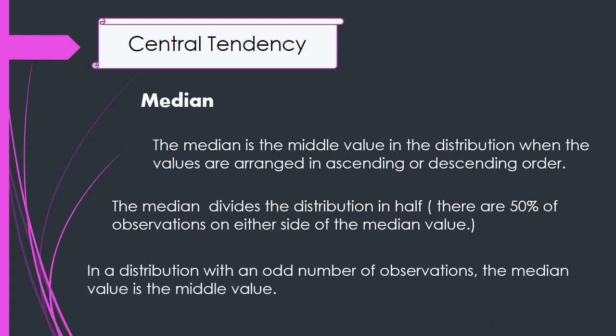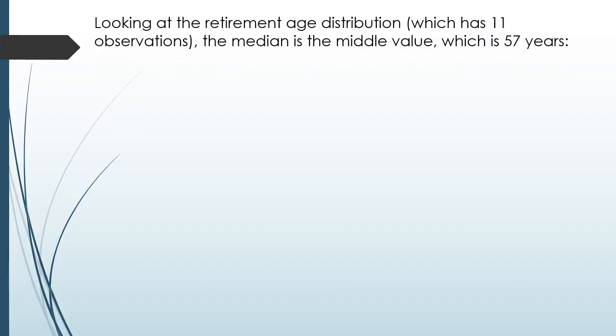In a distribution with an odd number of observations, the median value is the middle. Looking at the retirement age distribution, which has 11 observations, the median is the middle value, which is 57 years. So that's the median.